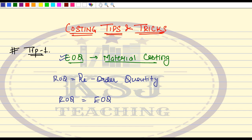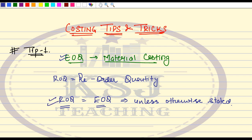Wherever ROQ is required — like in the maximum level formula — you will use the EOQ value. But remember: this applies unless otherwise stated. There can be a question where ROQ is different from EOQ — for example, where it says ROQ is 200 less than EOQ. If the question specifically states that, then it's fine. Otherwise, always remember ROQ equals EOQ unless otherwise stated. Read the question very carefully. Stay tuned, press the bell icon, see you in the next lecture with the next tip. Stay safe, stay healthy — thank you!